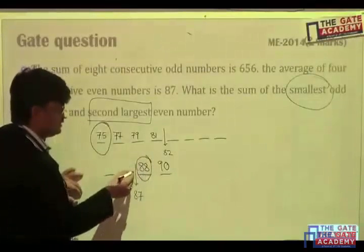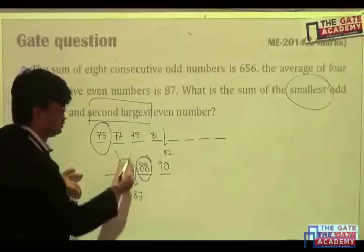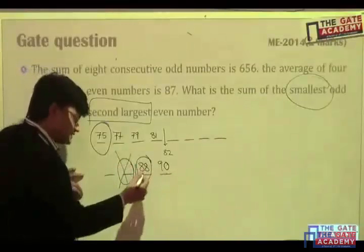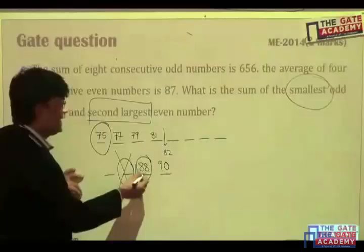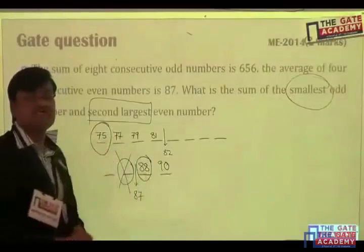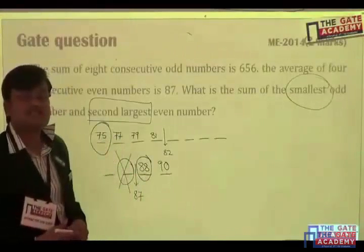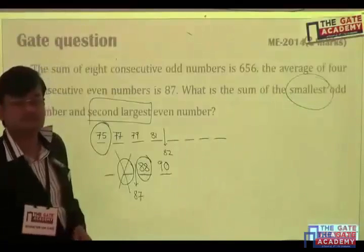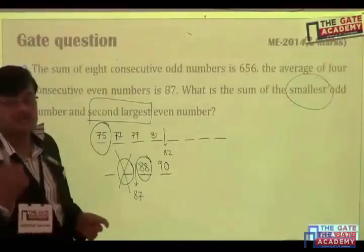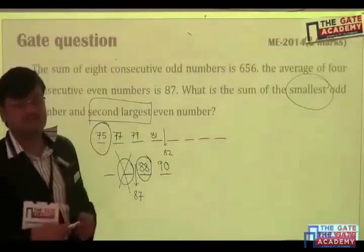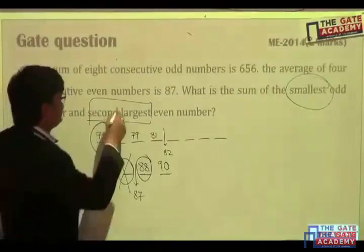Many times I have seen people will not read at all. Second largest. They don't take this. Wrong. This is largest. This is second largest. So, 88 plus 75. The answer will be 163. Yeah, I told you. Many times people will not read at all. Second largest. So, please be careful.